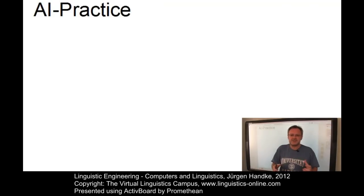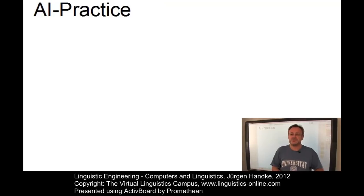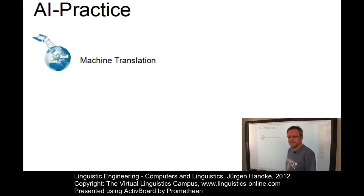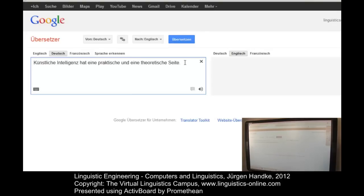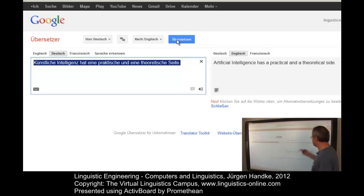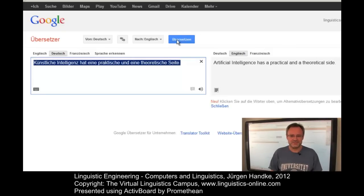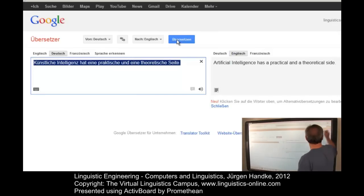The second approach in artificial intelligence is the basis for a variety of practical systems — some already exist, some are designed for future use. The first is machine translation. We use it quite often. Here is a sentence to translate: 'Künstliche Intelligenz hat eine praktische und eine theoretische Seite.' The translation is: 'Artificial intelligence has a practical and a theoretical side.' We cannot complain about this translation. We will not reveal how this translation is achieved by Google, but this is an important issue in artificial intelligence practice.